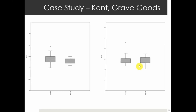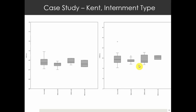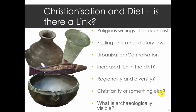I'm just throwing that out there — this is a pilot study, but something to consider. I've also looked at multiple other proxies: grave goods show not much difference in diet whether you have them or not; internment type doesn't show much either; many of these groups have quite small numbers so statistical significance is limited. Regarding religious writings, there's focus on the Eucharist but that doesn't really point to fish. Fasting and dietary laws wouldn't necessarily be visible isotopically unless you have extreme, near-starvation-level fasting.